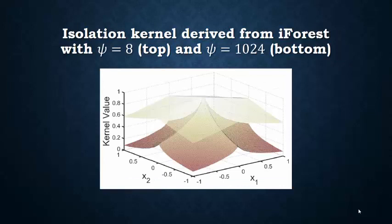This example shows that there is a parameter psi which controls the sharpness of isolation kernel. Large psi produces sharp kernel distribution you see at the bottom, and small psi produces shallow distribution you see on top.